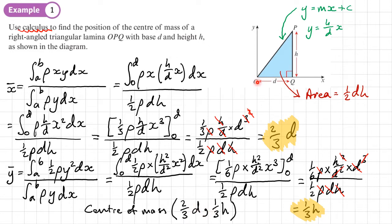We can verify: adding x-coordinates zero, D, D gives 2D, divided by three is two-thirds D. Adding y-coordinates zero, zero, H gives H, divided by three is one-third H. Same result — but remember, the question asks us to prove it by calculus, so we cannot just write this down and expect marks.